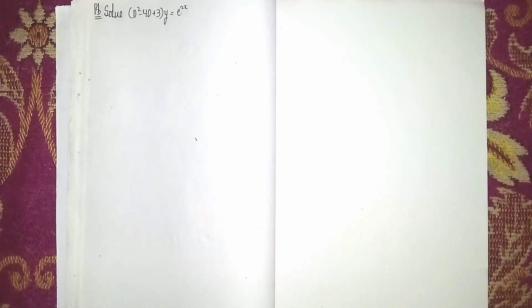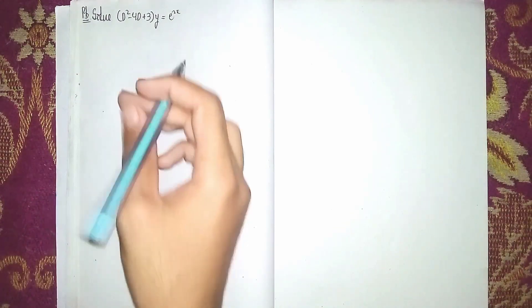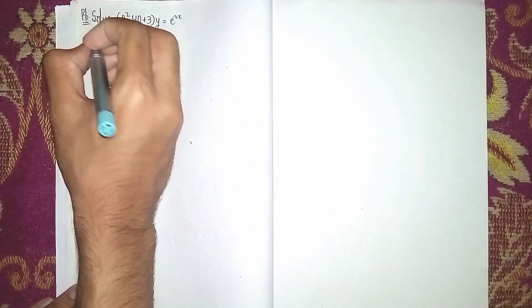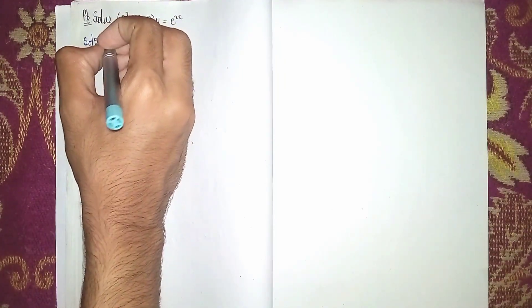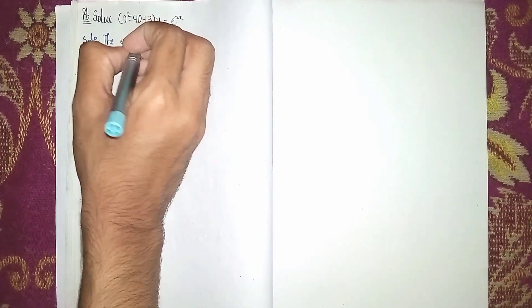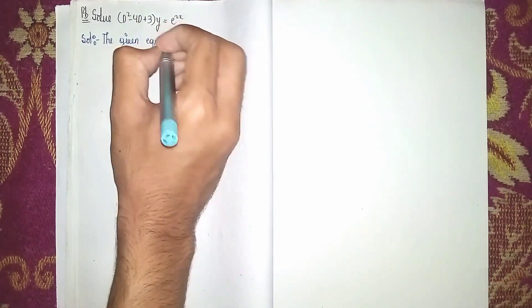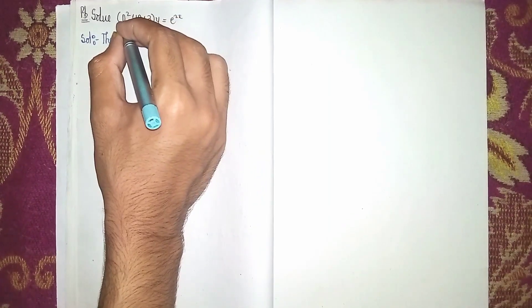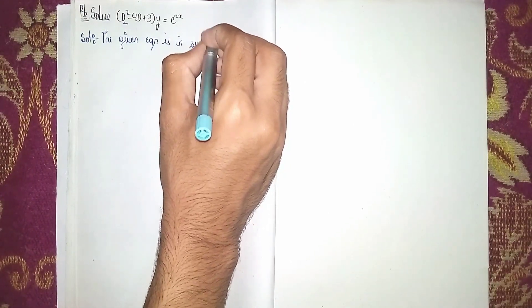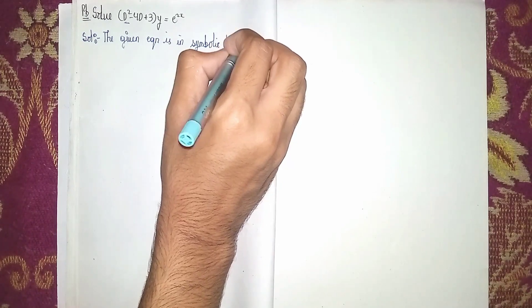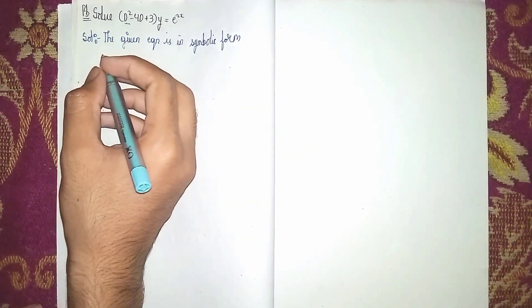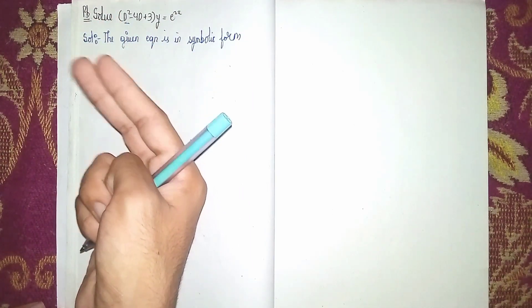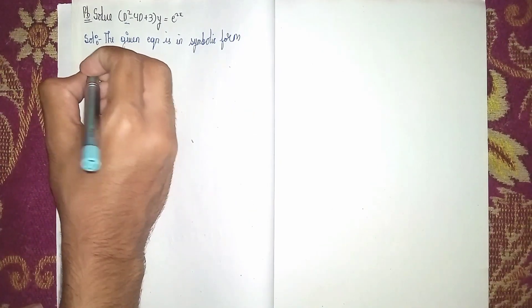Hello and welcome back to my channel. The equation is D² - 4D + 3, all into y, is equal to e^(2x). This is a non-homogeneous linear differential equation. To solve it, we follow three steps: first, find the complementary function; second, find the particular integral; and third, write the general solution.